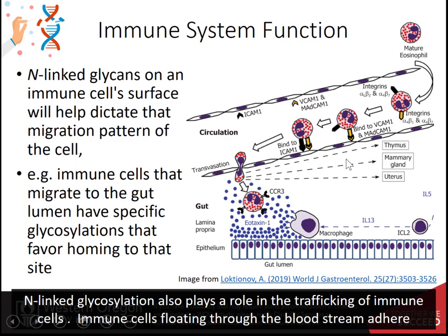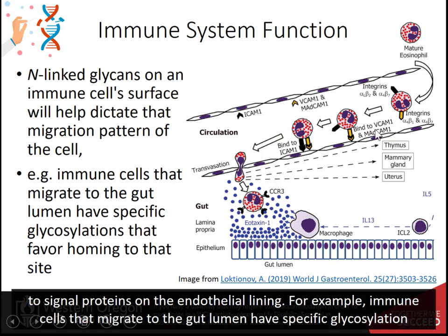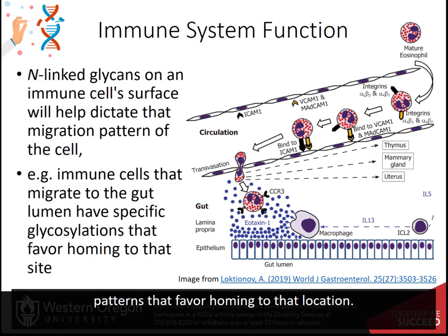N-linked glycosylation also plays a role in the trafficking of immune cells. Immune cells floating through the bloodstream adhere to signal proteins on the endothelial lining. For example, immune cells that migrate to the gut lumen have specific glycosylation patterns that favor homing to that location.